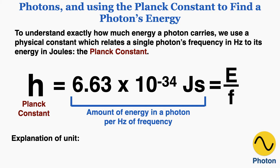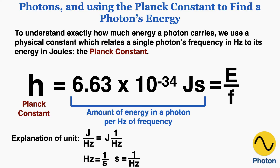As a quick explanation of the unit — you'll notice the unit is joule seconds. The unit of energy over frequency would be joules per Hertz, since Hertz is the unit of frequency. Rearranging, I get joules times 1 over Hertz. Since Hertz equals 1 over seconds, solving for 1 over Hertz shows that seconds equals 1 over Hertz. That means the unit of energy over frequency is equal to a joule second — joules multiplied by seconds — which is why the Planck constant has the unit that it does.